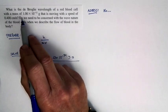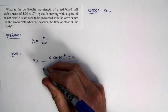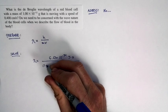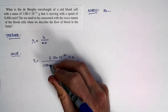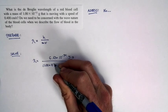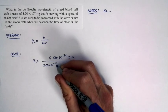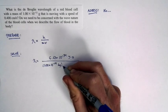Well, the mass is 1.00 times 10 to the negative 11th grams. But we don't want our mass in grams. We want it in kilograms. So we want 1.00 times 10 to the negative 14th kilograms. That's the mass.